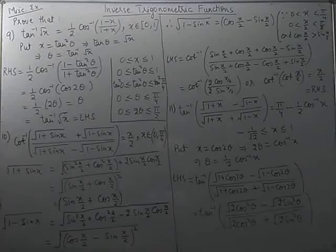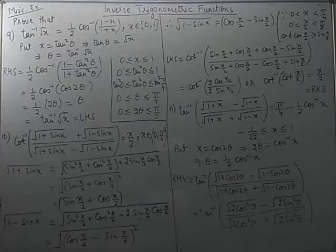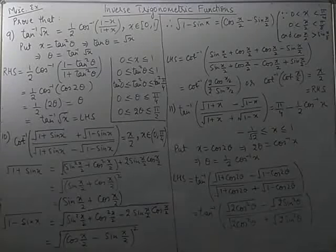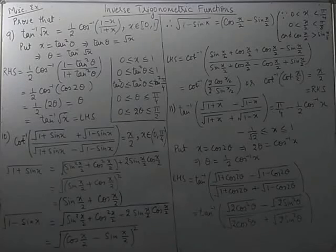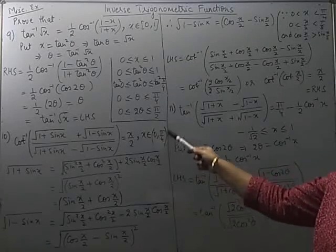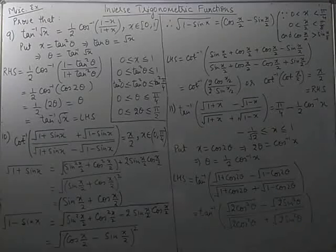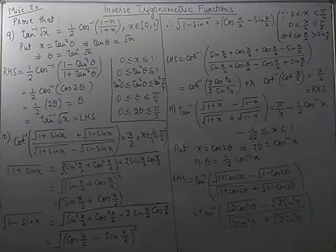Similarly, for √(1 − sinx): we replace 1 with sin²(x/2) + cos²(x/2) and sin x with 2 sin(x/2) cos(x/2) with a negative sign, giving the form (a − b)². Whether we write this as (sin(x/2) − cos(x/2))² or (cos(x/2) − sin(x/2))² depends entirely on whether cosine or sine is greater in the given interval, and accordingly the difference will be written.